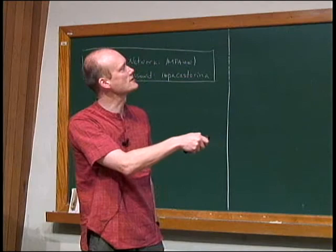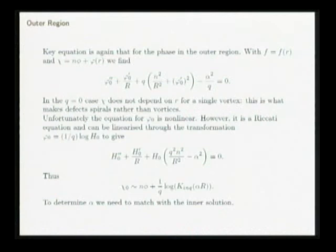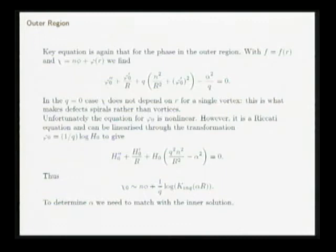Writing phi as the log of H_0 with a scaling of 1/q gives a linear equation for H_0. So nonlinear was bad, but it's linearizable — that's good. I can write down the solution and then write down the phase of the order parameter in the outer region, and you get the log of the modified Bessel function of complex arguments. But this still doesn't tell me what alpha is — to determine it I need to match with the inner solution.